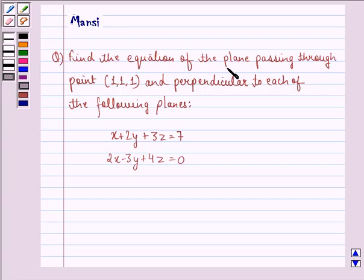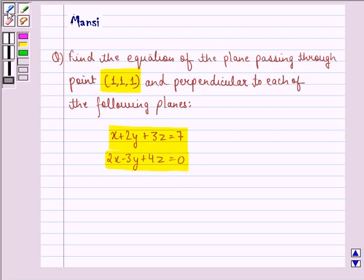The question says, find the equation of the plane passing through point (1,1,1) and perpendicular to each of the following planes: x + 2y + 3z = 7 and 2x - 3y + 4z = 0.